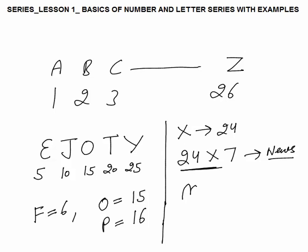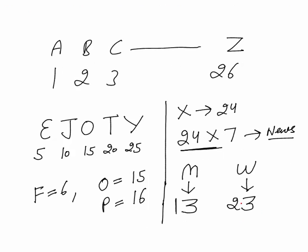For M and W: the shape of M and W is similar to the number 3. If you rotate M clockwise it becomes like a 3. M represents 13 and W represents 23. This visual trick helps you remember their positions easily.